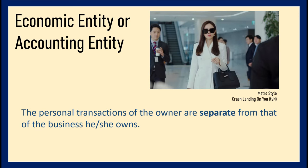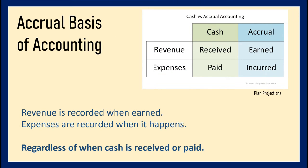The next concept is the Accrual Basis of Accounting. In accounting, we record revenue when it is earned and expenses when they happen, regardless of when cash is received or paid. For example, if a revenue event happened in January but payment was received in February, that transaction is still recorded in January — even though cash was not yet received.